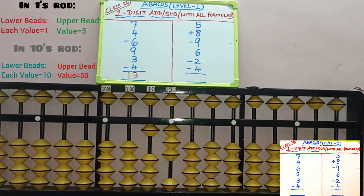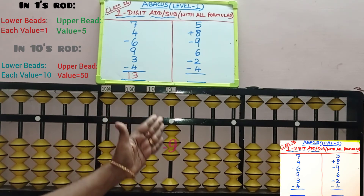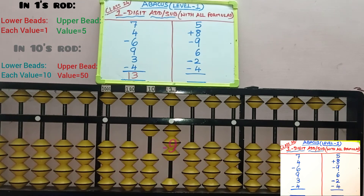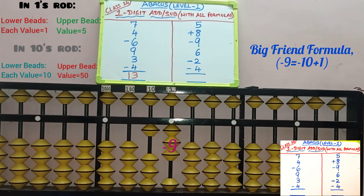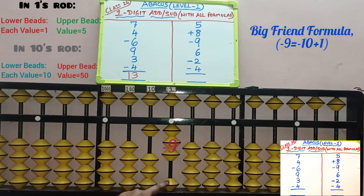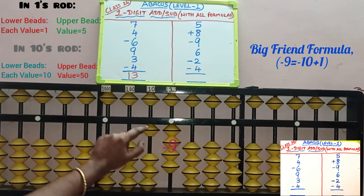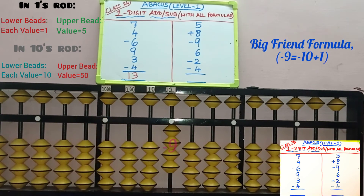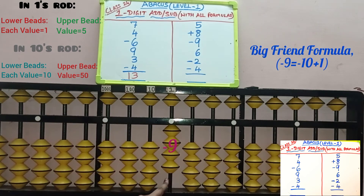Third row, minus 9 — we need to remove 9 beads from the 1 slot. Only 3 beads are available, so subtraction is not possible. Check big friend: 9's big friend is 1. In minus 9, we have to add 1 bead, and beads are available to add. Apply big friend — do plus 1 while adding the friend, then remove the boss in the 10's place: minus 10. 9 is removed with minus 10 plus 1.